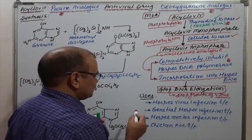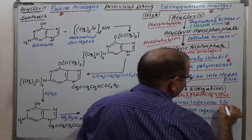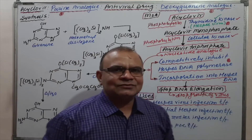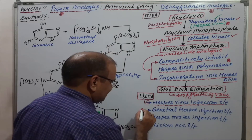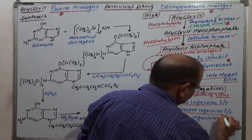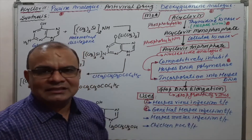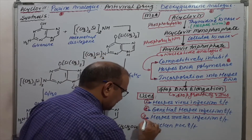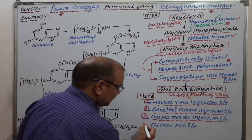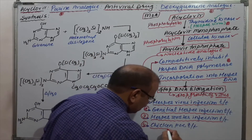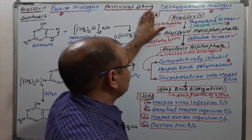The uses of acyclovir: the main use is for herpes virus infection treatment — it may be infection anywhere in the whole body, and acyclovir is highly effective. Second, for genital herpes virus infection — vaginal infection due to herpes — acyclovir is also recommended. Third, for herpes zoster infection treatment. Fourth, for the treatment of chickenpox. All these are viral infections treated with acyclovir.